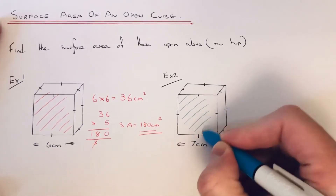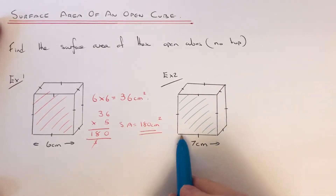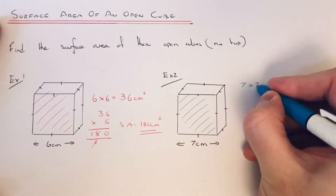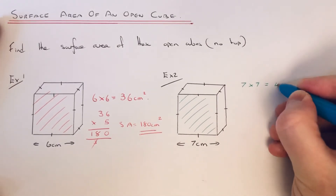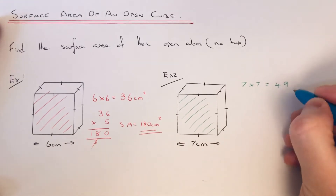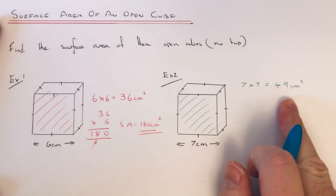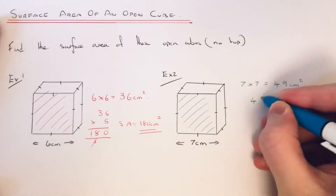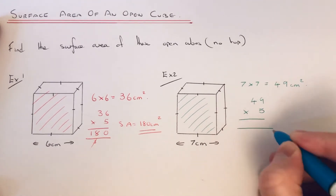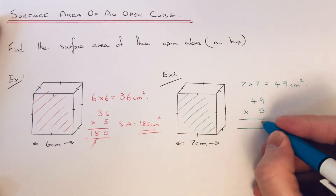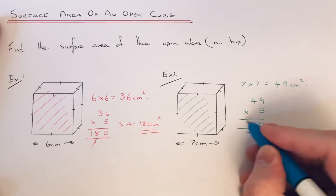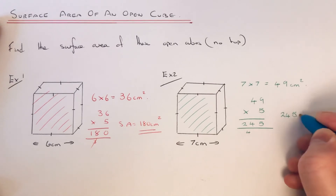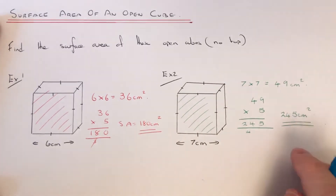Let's work out the area of that front face. It's a square with side length 7, so it would be 7 times 7 for the area — 7 times 7 is 49. That's the area of one face. Just like example 1, we now need to times that by 5, because there are 5 identical faces. So our final answer is 245cm squared.